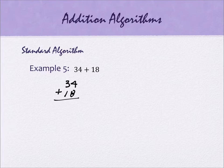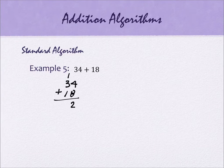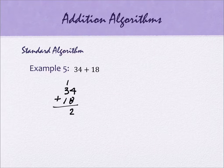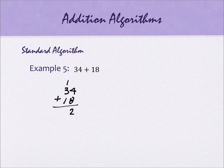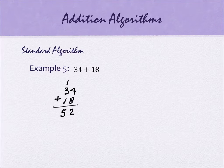So 4 plus 8 is 12. They don't call it 'carrying' anymore — they call it regrouping. You put the 2 down and move the 1 somewhere else. Then you add 1 plus 3 plus 1 to get 5, giving you 52. The reason for the language change is meaningful: you're not just carrying, you're regrouping a value into its correct place.